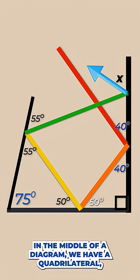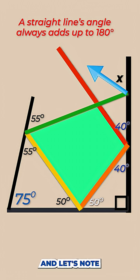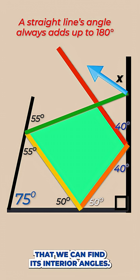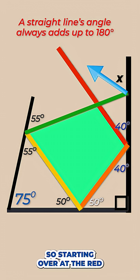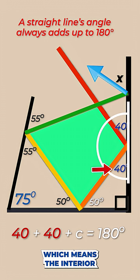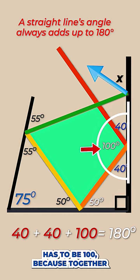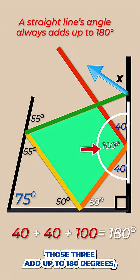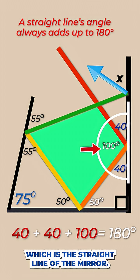Now let's observe that in the middle of a diagram we have a quadrilateral. And let's note that we can find its interior angles. So starting over at the red and orange rays, we've got a 40 degree angle and a 40 degree angle, which means the interior angle of the quadrilateral has to be 100 because together those three add up to 180 degrees, which is the straight line of the mirror.